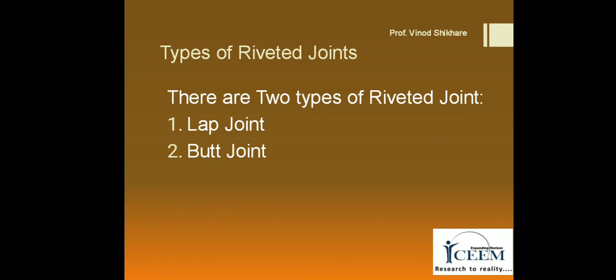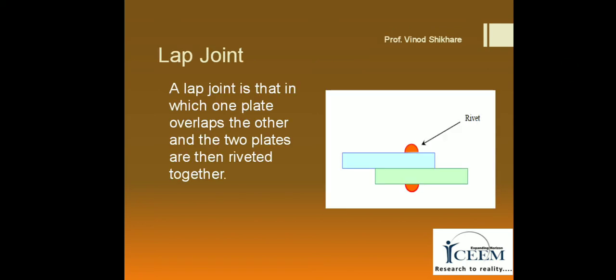Types of riveted joints: There are two main riveted joints — the first is the lap joint and the second is the butt joint. In a lap joint, the plates to be joined are brought face to face such that an overlap exists. As shown in the figure, rivets are inserted on the overlapping portion. Single or multiple rows of rivets are used to give strength to the joint.